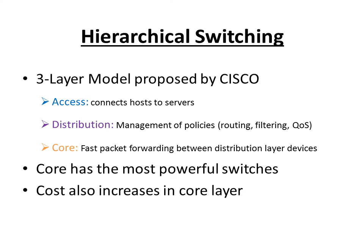The last topic is hierarchical networking. A three-layer model was proposed by Cisco which divides the network into three layers. The access layer connects end stations or hosts to the servers. The distribution layer oversees the management of policies like routing, filtering, and quality of service. The core layer provides fast forwarding to move packets between distribution layer devices in the network.